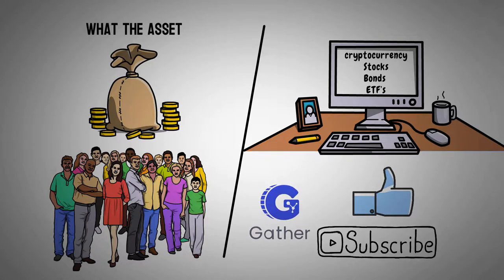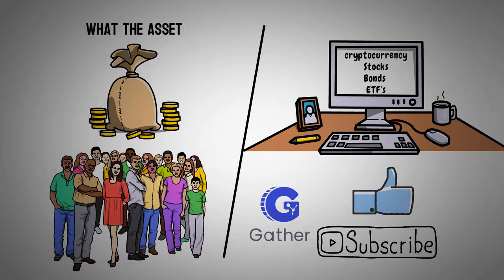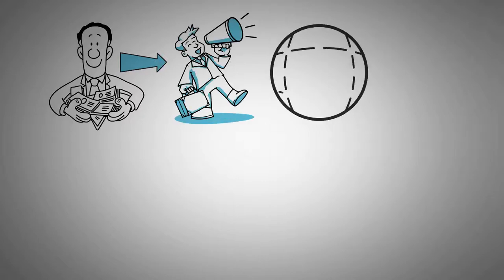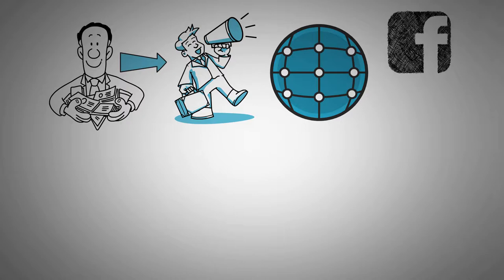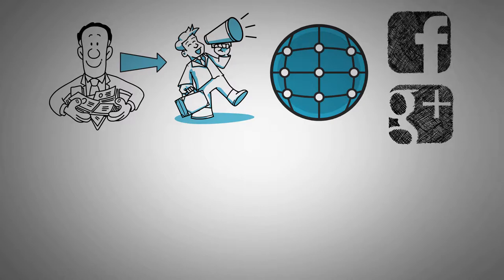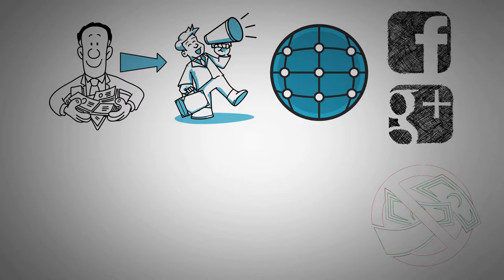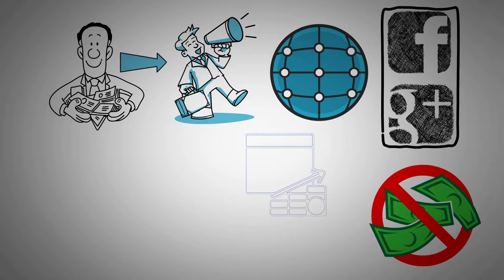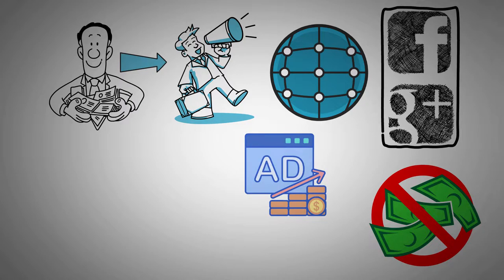In today's video, we're going to discuss Gather, a unique solution to a problem we've all dealt with: ads on our favorite websites. Today, many businesses spend boatloads of money on digital advertising. They want their business to be seen online, so they post ads on social media platforms or search engines like Facebook and Google. And this isn't necessarily a bad thing — it allows the platforms to continue to operate without charging you, the user, money. Think about it: you can use Facebook and Google for free because these platforms rely on ad revenue to keep them running.